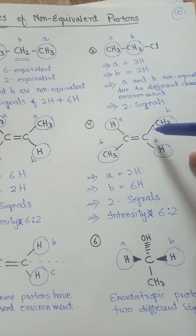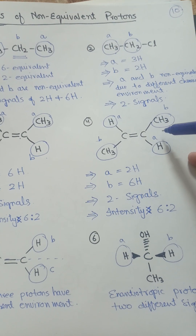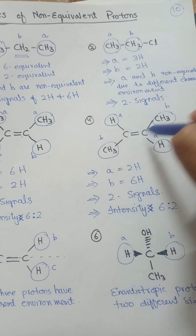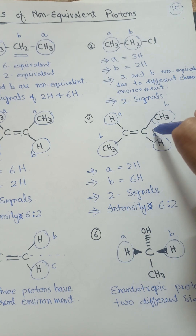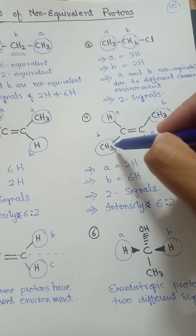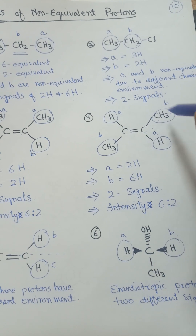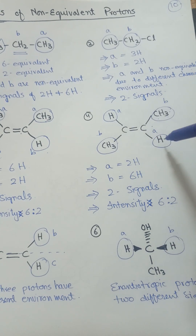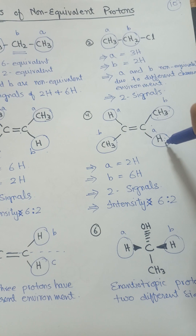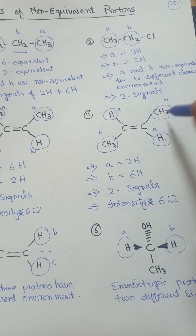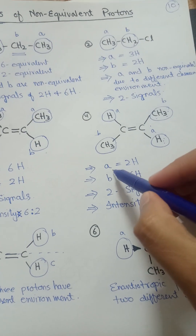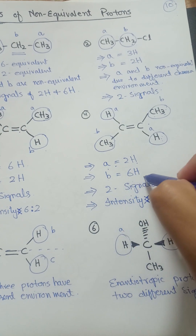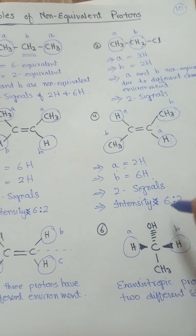Here is another example in which the methyl groups are in the trans position across the carbon-carbon double bond. Again, these three and these three protons are in the same environment, represented as A, and the two vinyl protons are represented as B. So for A we have six protons and for B we have two protons, giving two signals with a ratio of six to two.